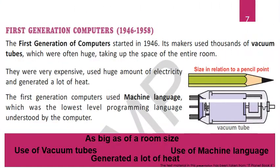First generation computers started in 1946. These computers make use of vacuum tubes as a switch or amplifier. The computers were as big as a room. The first generation computers make use of machine language, which is the language of zeros and ones. It is a low-level language that is machine dependent, meaning the programmer has to do machine-specific coding, which is really a tedious job.